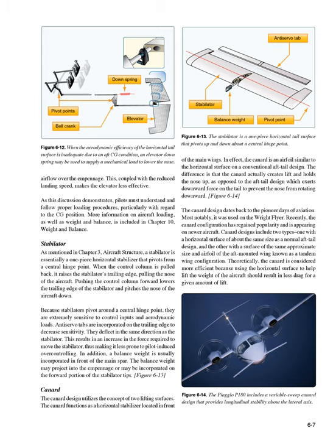A stabilator is essentially a one-piece horizontal stabilizer that pivots from a central hinge point. Pulling the control column back raises the stabilator's trailing edge, pulling the nose up; pushing forward lowers the trailing edge, pitching the nose down. Because stabilators pivot around a central hinge point, they are extremely sensitive to control inputs and aerodynamic loads. Anti-servo tabs are incorporated on the trailing edge to decrease sensitivity—they deflect in the same direction as the stabilator, increasing the force required to move it and reducing pilot-induced over-controlling. A balance weight is usually incorporated in front of the main spar.